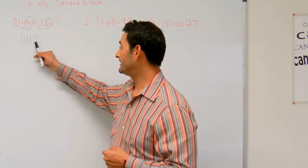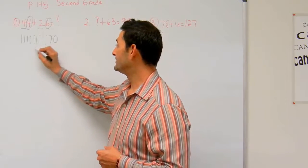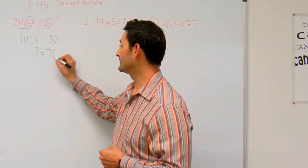So add another bundle of 10 and let's count: 10, 20, 30, 40, 50, 60, 70. So 44 plus 26 equals 70, and question mark equals 70.